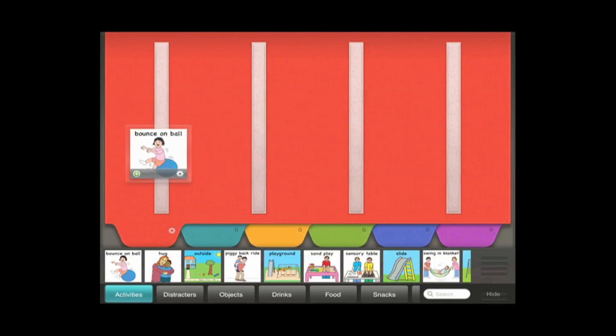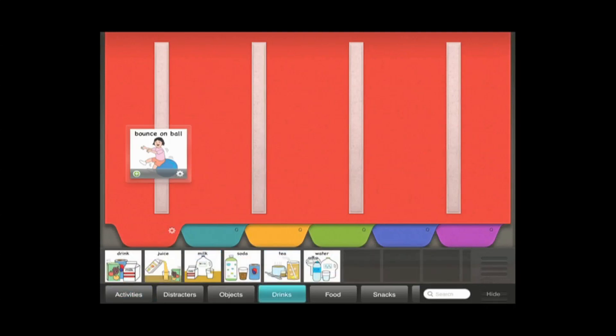Once you locate the picture you need, simply drag it onto the PECS page. Tap the Hide button to close the picture menu.